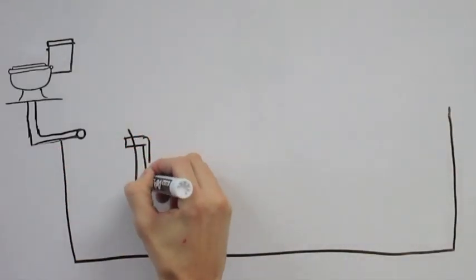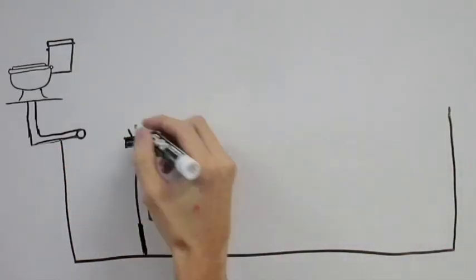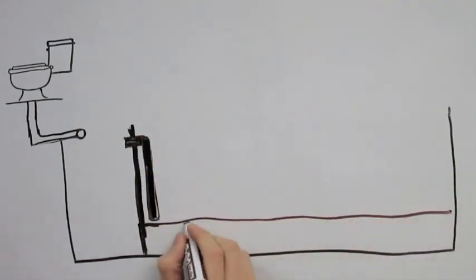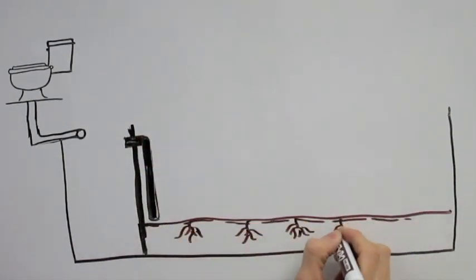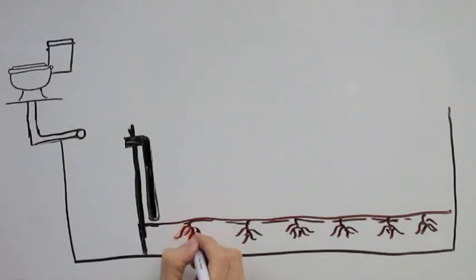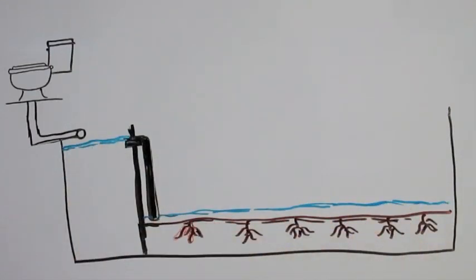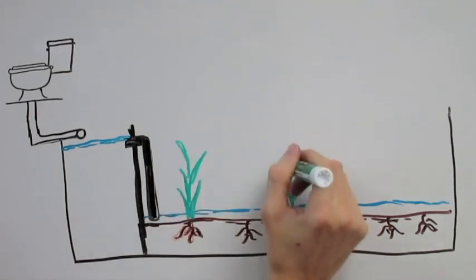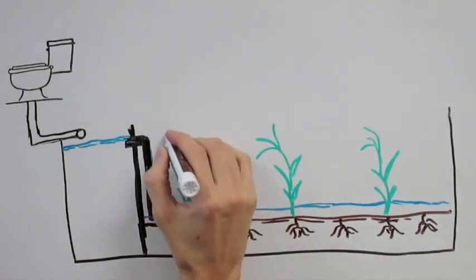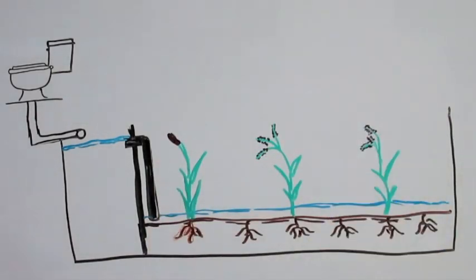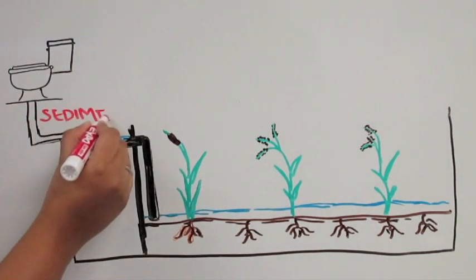Constructed wetlands are an attractive alternative for wastewater treatment as they mimic natural ecosystems, support wildlife, and are less costly to maintain. A constructed wetland is an engineered ecosystem that supports wildlife while treating anthropogenic discharge such as wastewater. For the sake of educating the woefully ignorant Suzy Q, let's look at the steps of wastewater treatment via constructed wetlands.